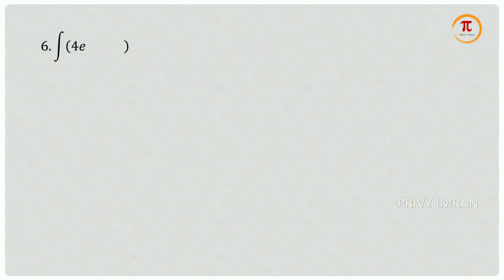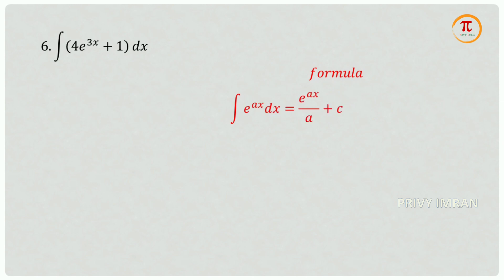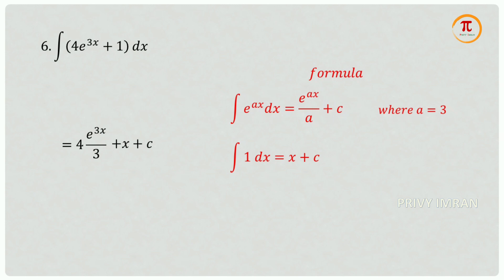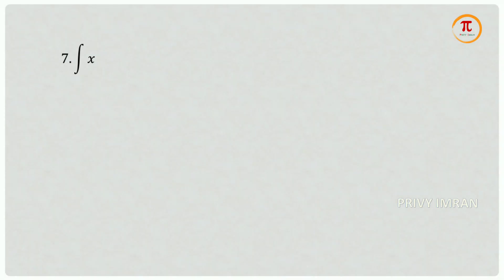Question number 6: integration of 4 e power 3x plus 1 dx. Using integration of e power ax dx equals e power ax divided by a plus c where a equals 3, gives 4 e power 3x divided by 3. Using integration of 1 dx equals x plus c, the required answer is 4 e power 3x divided by 3 plus x plus c.